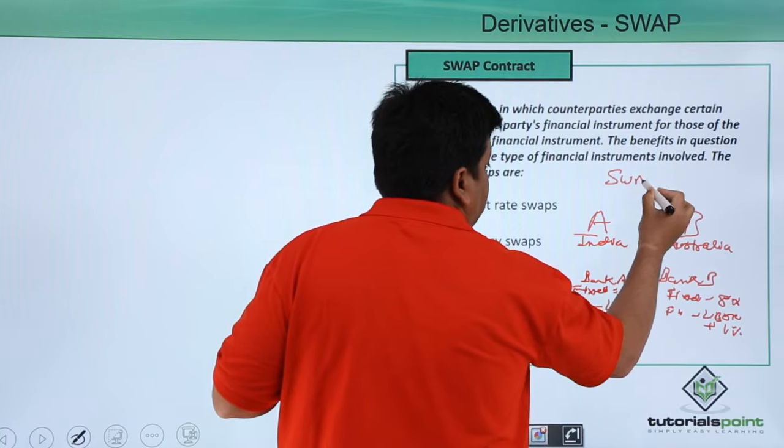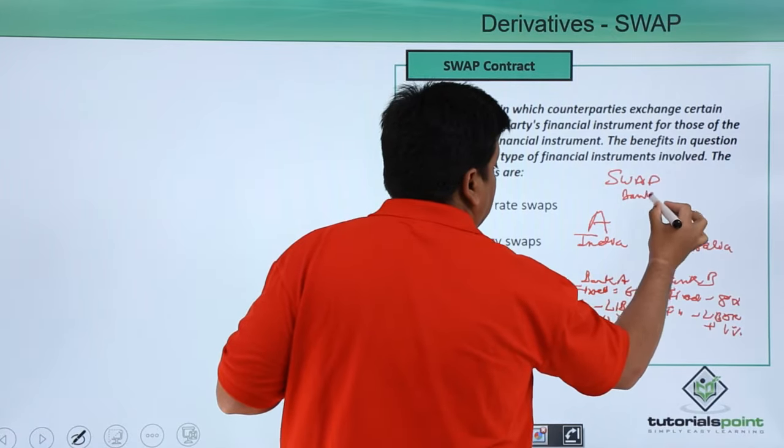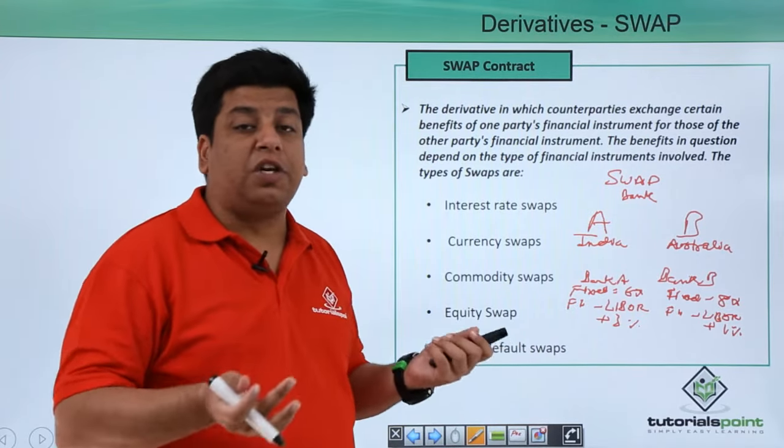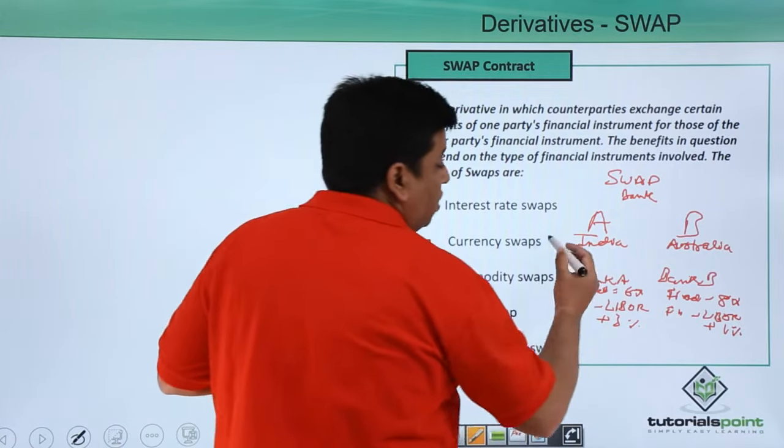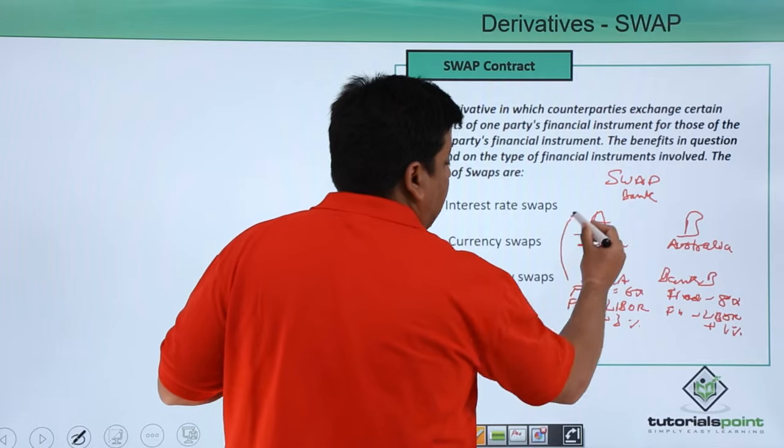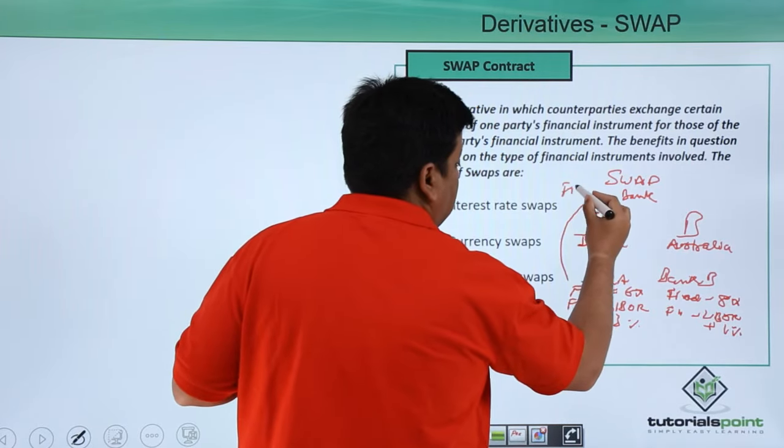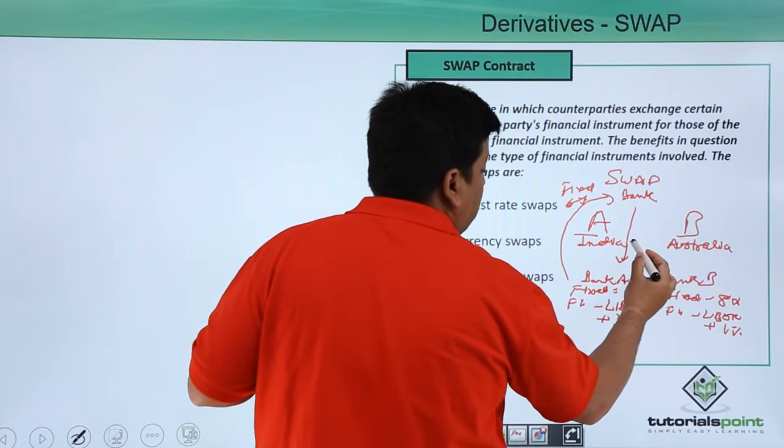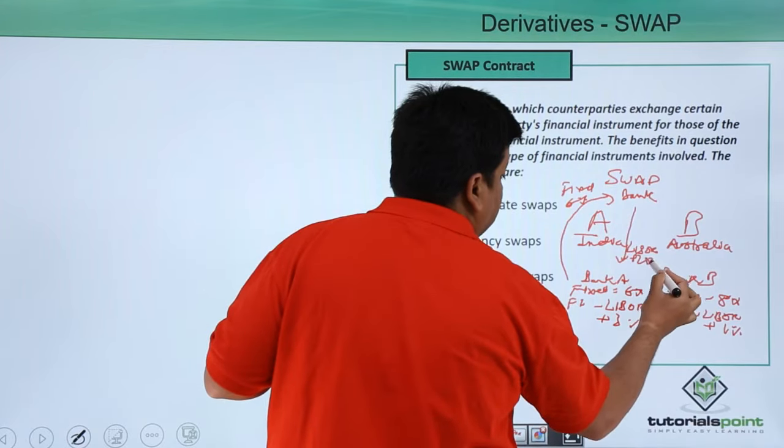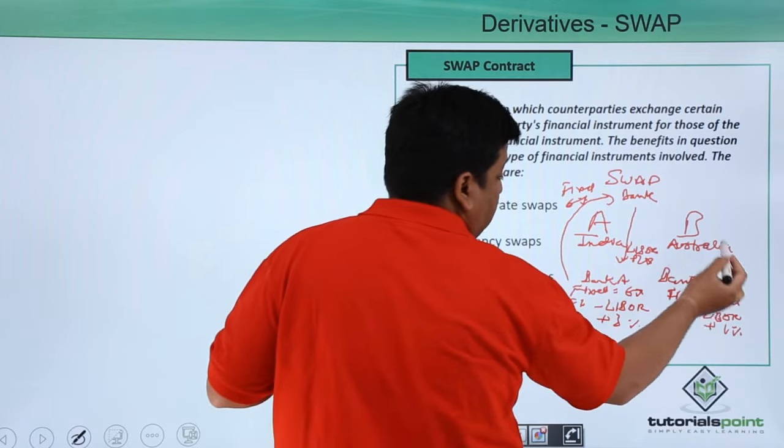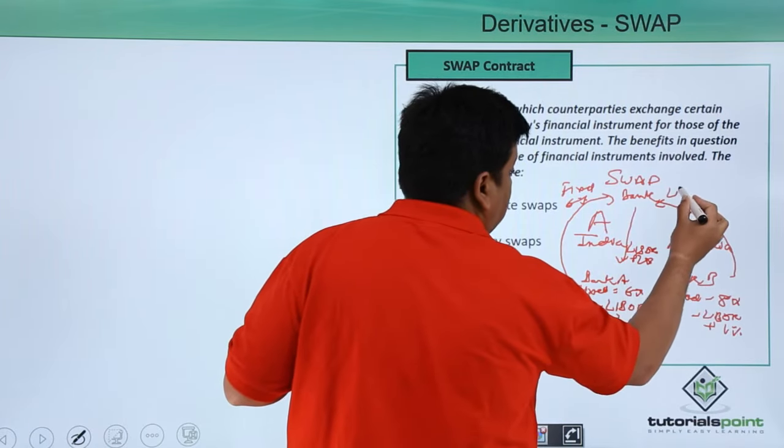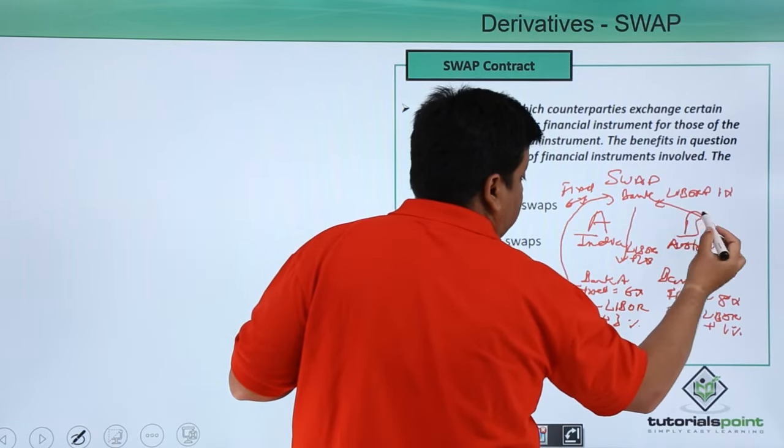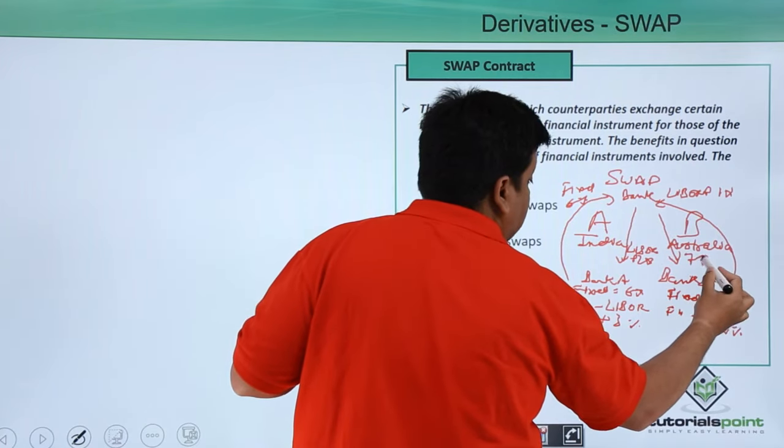HSBC here will be acting as swap bank where it will facilitate the swapping of interest rate between both the companies. HSBC gives loans at a fixed rate of 7%.